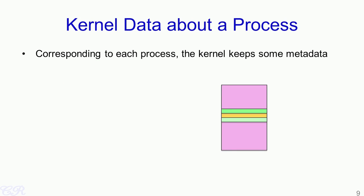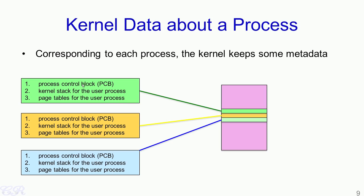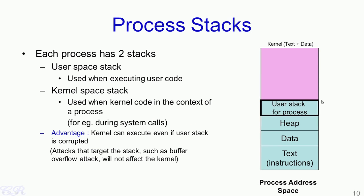Now that we have seen where the kernel exists in the RAM and where it gets mapped to in the virtual address space of each process, we will look at what metadata the kernel has corresponding to each process. Each process in the system has three metadata: the process control block, a kernel stack for that user process, and the corresponding page table for that user process. Each process that runs in the system will have these three blocks that are unique to that process. We have already seen that page tables map the virtual addressable space of that user process to the corresponding page frames the process occupies.